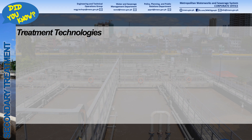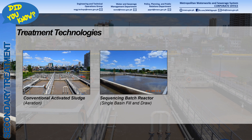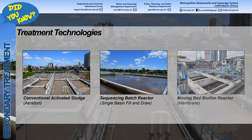Secondary treatment starts after primary sedimentation. The secondary treatment process determines the type of treatment technology that will be used. The most common treatment technologies and their secondary treatment processes are: conventional activated sludge using aeration, sequencing batch reactor using a single basin fill and draw scheme, and moving bed biofilm reactor using a membrane for microorganisms to attach.